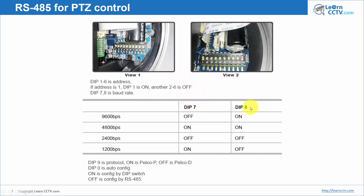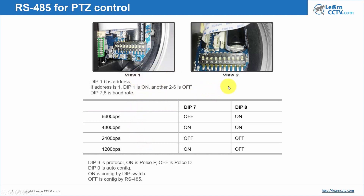For example, DIP switches one through six set the address, so you can choose ID one, ID two, and so on — you look at the table and choose the ID for your camera. DIP switches seven and eight let you choose the baud rate: off and on for 9600, on and on for 4800, off and off for 2400, on and off for 1200. You can also choose the protocol — for example, on for Pelco P and off for Pelco D. You make the configuration on the camera, then go to your DVR and do exactly the same configuration, and everything will work.